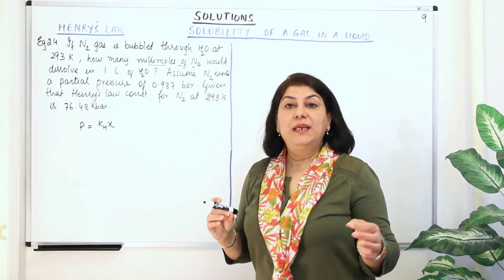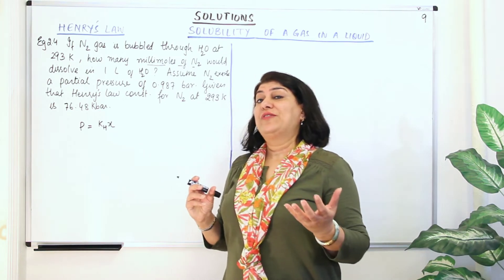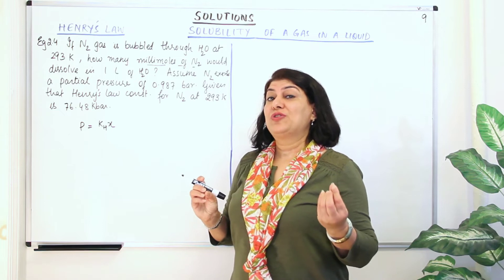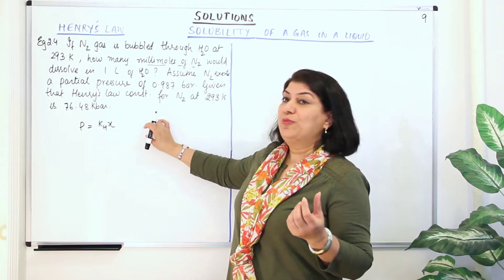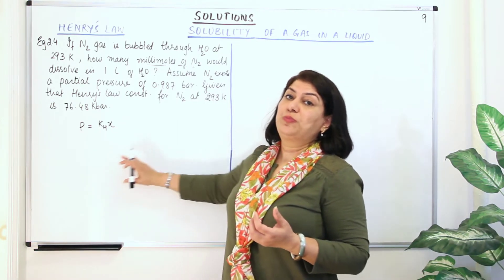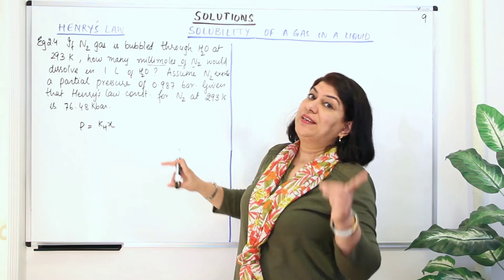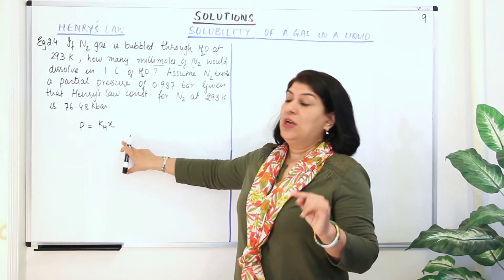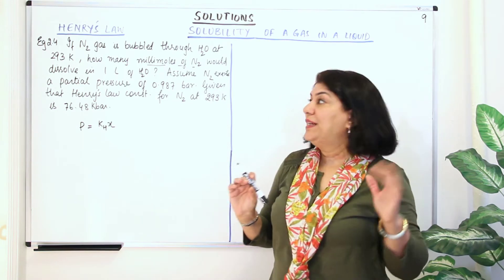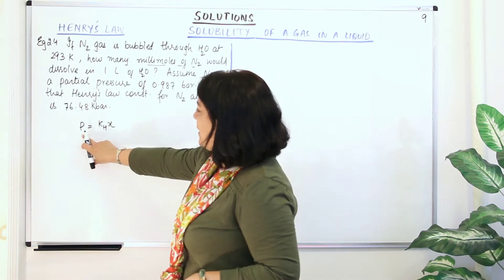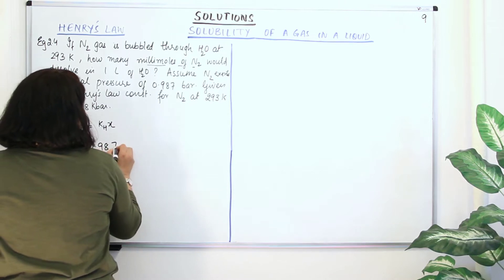In order to know the number of millimoles, you must first know the number of moles of nitrogen. And to know the number of moles of nitrogen from Henry's Law, we use the mole fraction. Mole fraction is the number of moles of solute divided by the number of moles of solute plus number of moles of solvent, that is water. So if we know x, we can calculate the number of moles. The first aim here would be to find out x. We've been given the partial pressure — P is 0.987 bar.